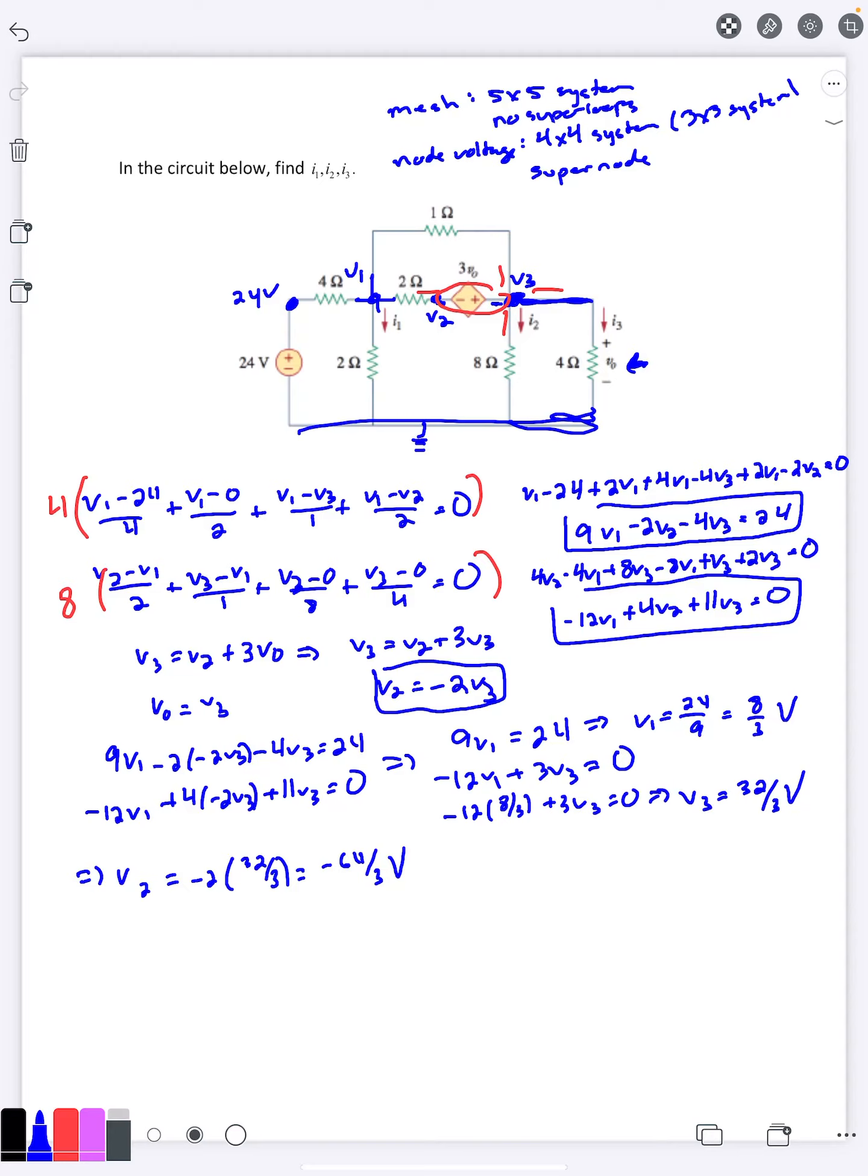Of course now we need to look back at the original problem. They wanted i1, i2, and i3, so we use Ohm's law here. i1 is v1 minus 0 over 2, that would be 8 thirds minus 0 over 2 is 4 thirds amps. i2 is v3 minus 0 over 8, so that's going to be 32 thirds minus 0 over 8 is 4 thirds amps. And i3 is v3 minus 0 over 4, 32 thirds minus 0 over 4 is 8 thirds amps. And that has solved for the currents that we were looking for.